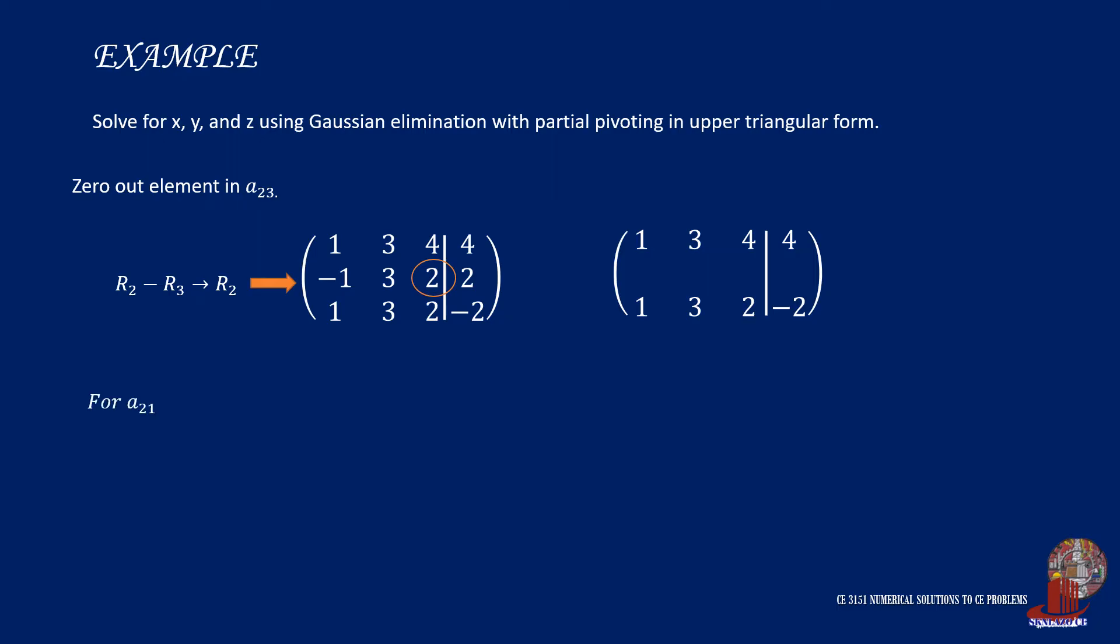So for a21, we get negative 1 minus 1 is negative 2. For element a22, positive 3 minus 3 makes the new element 0. Then element a23 gives 2 minus 2 which is 0. Then the constant is updated as 2 minus negative 2 and that is 4.